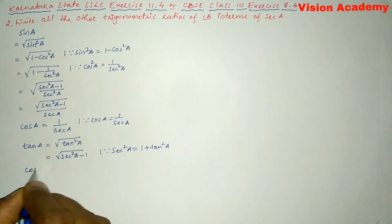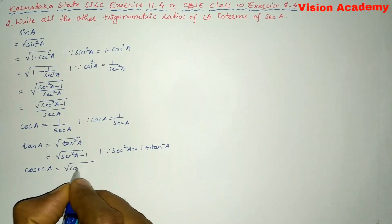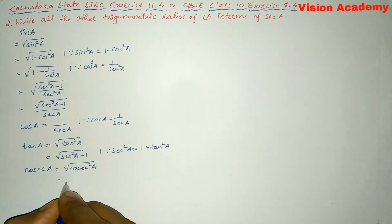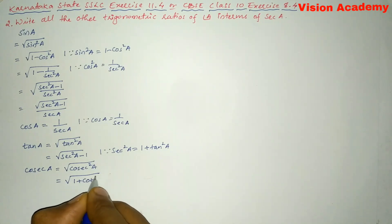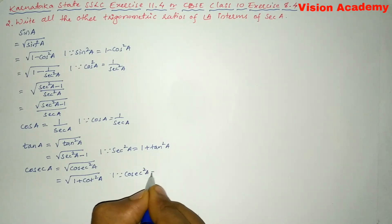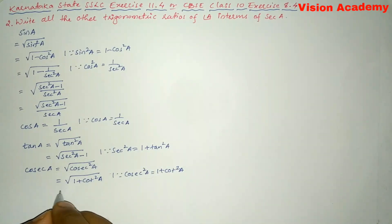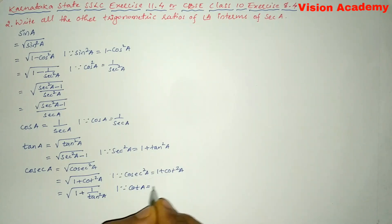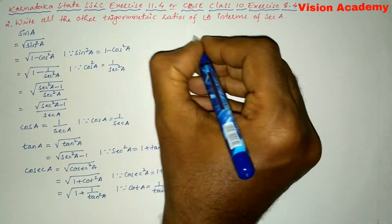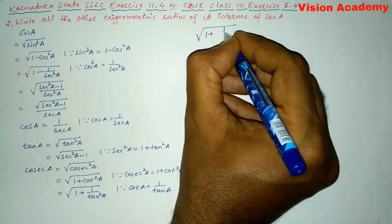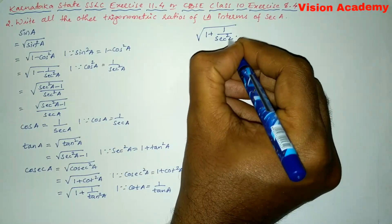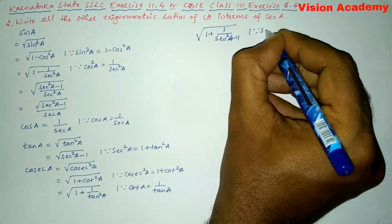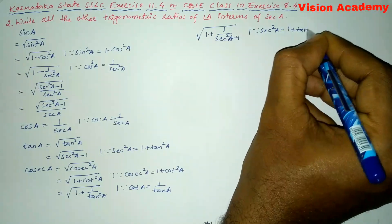We will move on to the next one, that is cosec A. This can also be written as square root of 1 + cot²A, because cosec²A = 1 + cot²A. Now, cot²A can also be written as 1 divided by tan²A, since cot A = 1/tan A. And this tan²A can be written as 1 divided by (sec²A - 1), because from the identity sec²A = 1 + tan²A, we get tan²A = sec²A - 1.